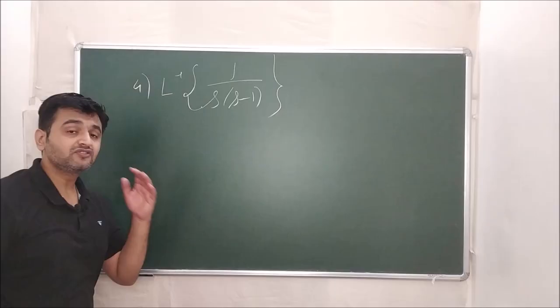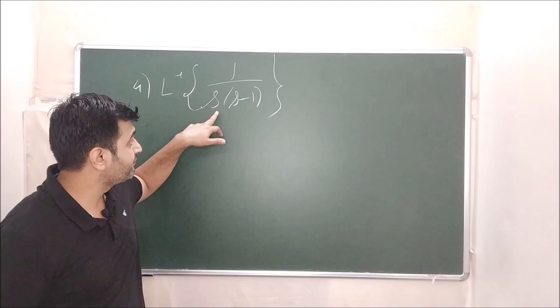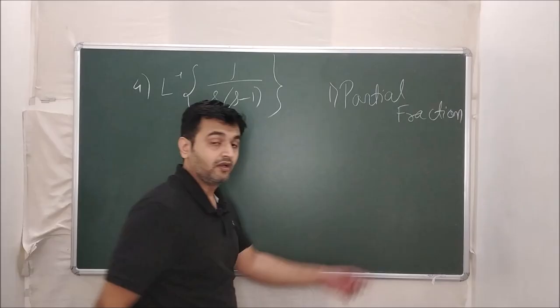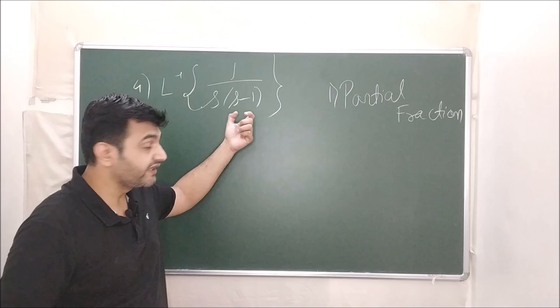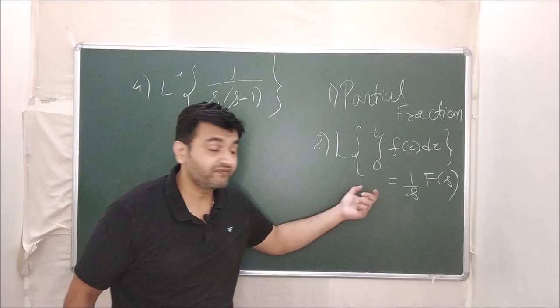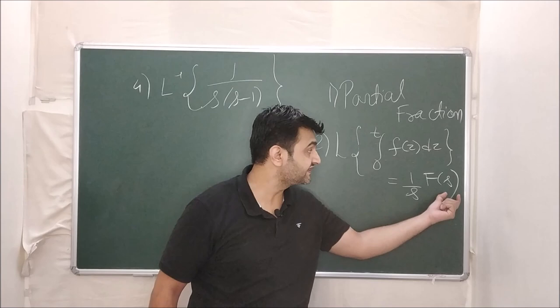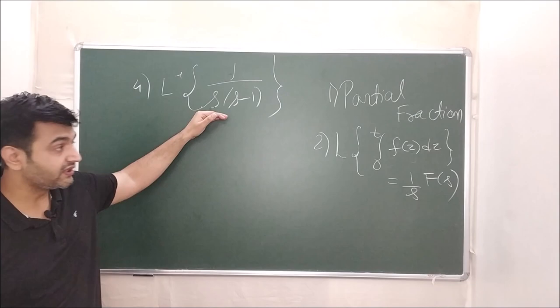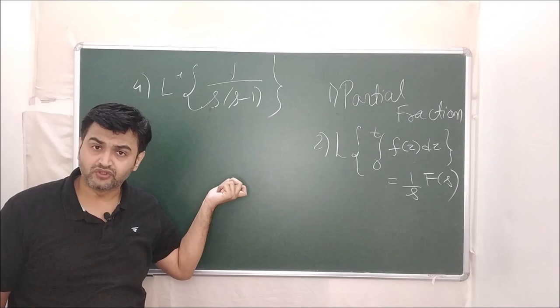Now let's find the inverse Laplace of 1/[s(s−1)]. When you see a product in the denominator, the first approach is partial fractions. Another approach: since 1/s appears, you can use the Laplace of integration technique — recall that L⁻¹{(1/s)·F(s)} gives integration. But let's also do this by convolution, which is a third method. Whenever you have a product in the denominator, partial fractions or convolution both work.